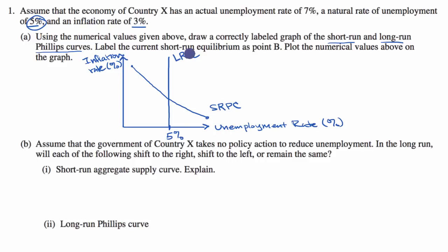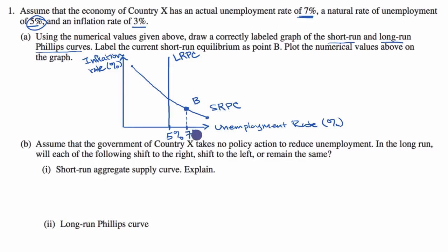They say to label the short-run equilibrium as point B. So point B is right here, where we have an unemployment rate of 7% and an inflation rate of 3%. Our unemployment rate is 7% on the horizontal axis and our inflation rate is 3% on the vertical axis. All right, let's do the next section.